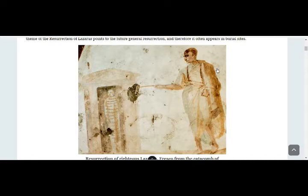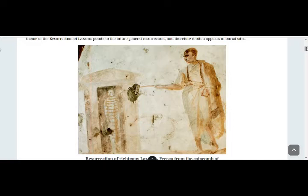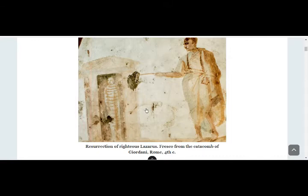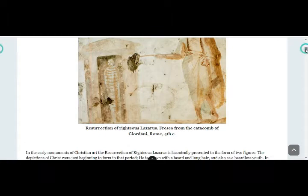Christ is depicted dressed basically in a chiton, without long hair and without a beard — basically looking like a Roman. This is something we see many times in the frescoes of Rome, Christ depicted in this event. Of course, let's remember this was the fourth century. This is supposed to be Lazarus — Lazarus is still bound right there.